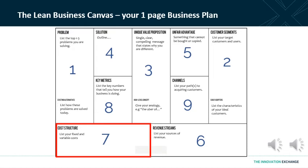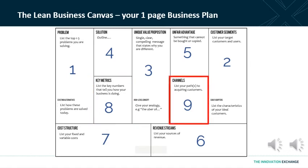Number eight: key metrics. How will you measure the success of your business? What does success look like? How will you know, as you go through the first year and second year of your business, if you're on track and actually achieving what you want to achieve? The fewer, clearer, and more measurable these metrics can be, the better.